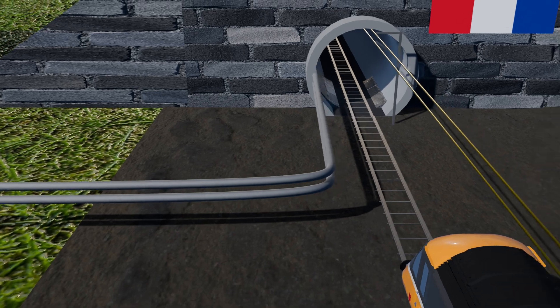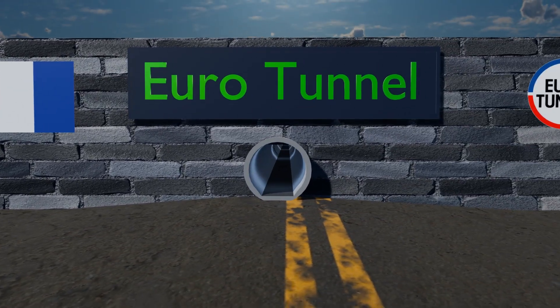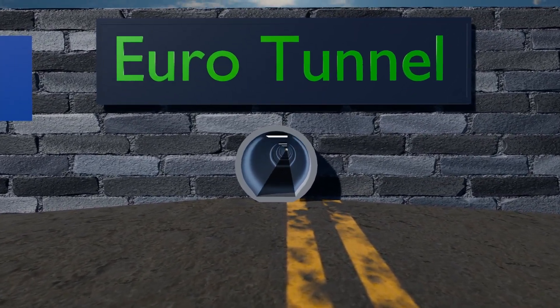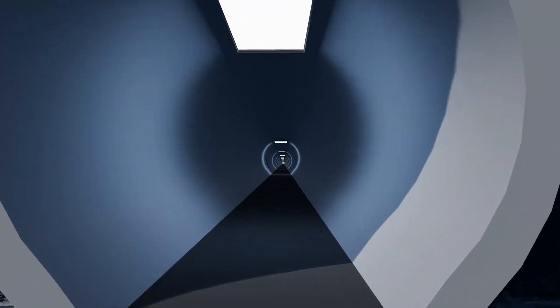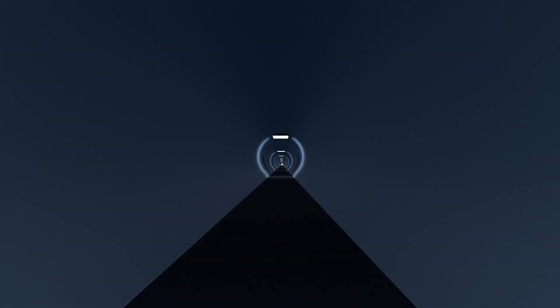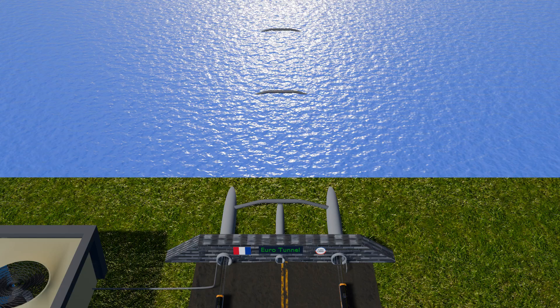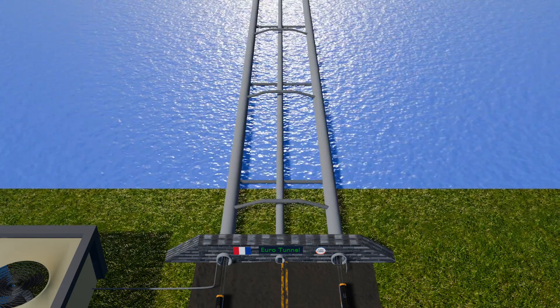Additionally, the service tunnel plays a vital role in ventilation as it supplies fresh air to the main tunnels and removes polluted air. In case of emergencies, several other safety systems have also been installed to ensure the well-being of passengers and operational integrity.